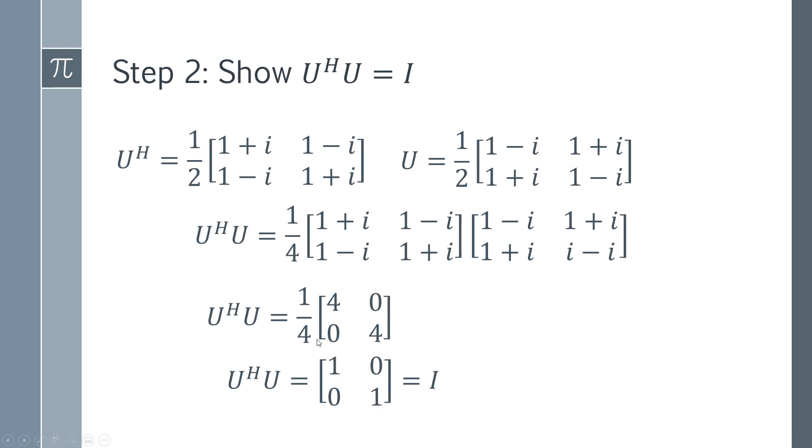So you've got the leading diagonal with ones, and the off diagonal are zero. That is by definition your identity matrix. And so you've shown that your conjugate transpose multiplied by your original matrix is the identity, and therefore you have a unitary matrix.